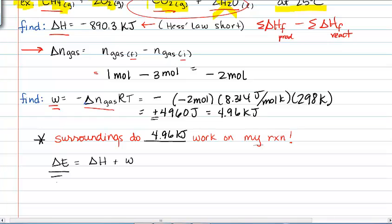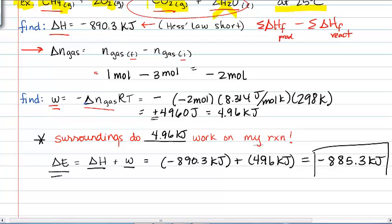Now, if we want to try to find ΔE, which is ultimately what I asked you to find, we need we had to find ΔH and we had to find work. So that's going to be equal to the negative 890.3 kilojoules from ΔH, plus 4.96 kilojoules of work, which I've got to plug that into my calculator here. So negative 890.3 plus 4.96 gives me negative 885.3 kilojoules is my answer.